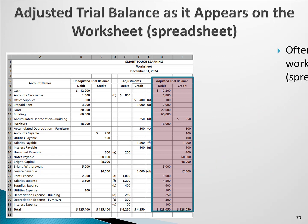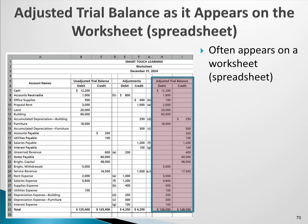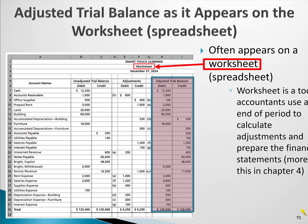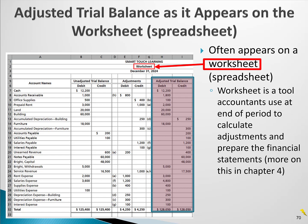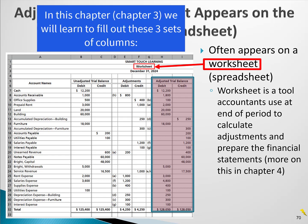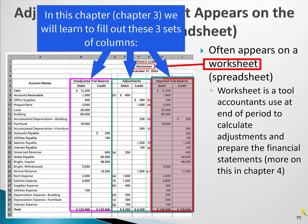The adjusted trial balance often appears on this spreadsheet called the worksheet — the tool the accountant uses to help do the adjusting entries at the end of the accounting period. We'll learn how to do the whole worksheet in chapter four, but in this chapter, chapter three, we'll be working on the unadjusted trial balance columns, the adjustments columns, and the adjusted trial balance columns.